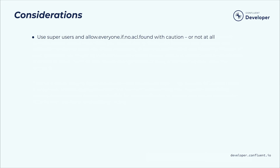ACLs provide a powerful, fine-grained means of securing Kafka resources, but they do require careful management. In development and test environments, it's often tempting to grant access to the anonymous principal, or to use Kafka's notion of super user or the allow-everyone-if-no-ACL-found setting, to grant broad access to resources and simplify ACL management. But used carelessly, these shortcuts, if promoted to production environments, can leave resources and sensitive data unprotected. Super users in particular cannot be denied access using deny ACLs.